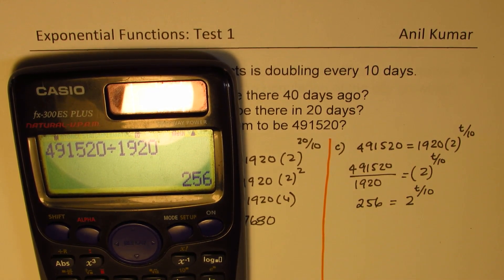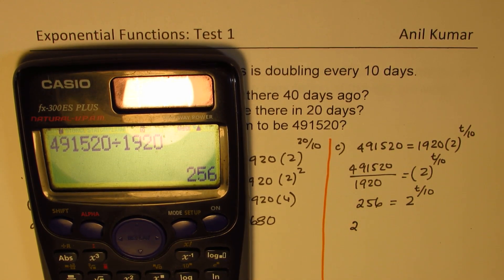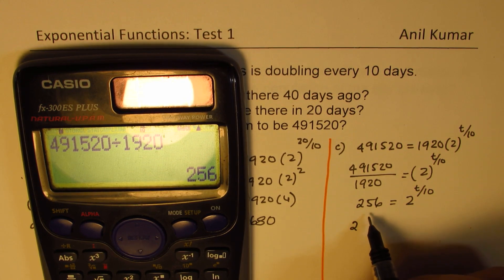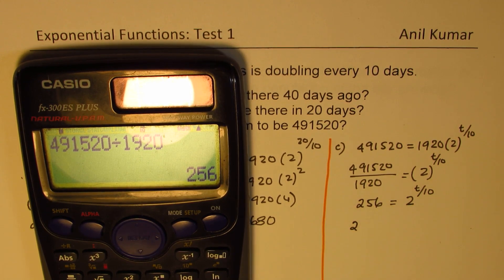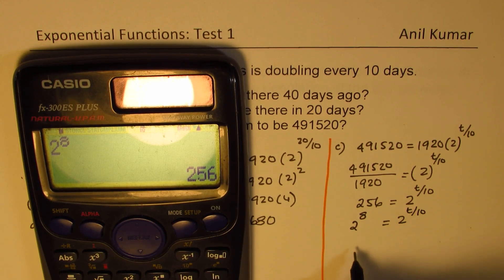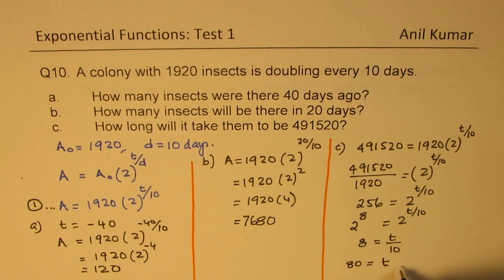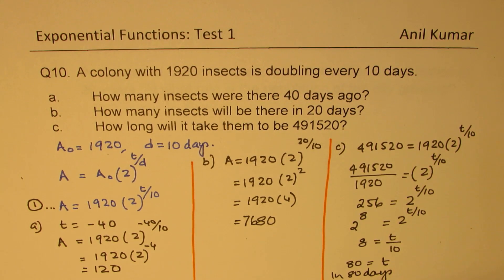Now 256 can be written as a power of 2. We check: 2 to the power of 8 is 256. So we can write 2 to the power of 8 equals 2 to the power of T over 10. That means 8 equals T over 10, so T equals 80 days. In 80 days, that is the solution.